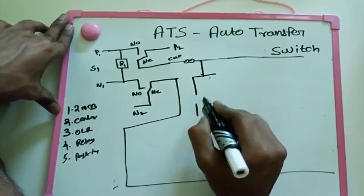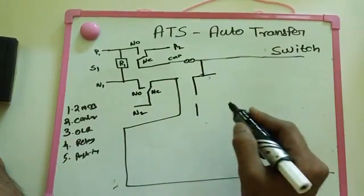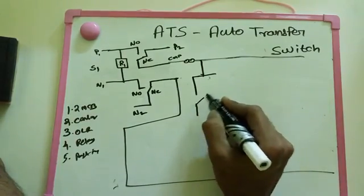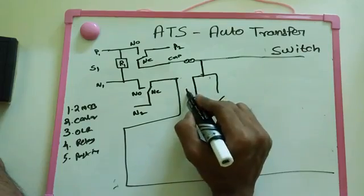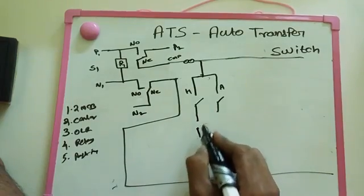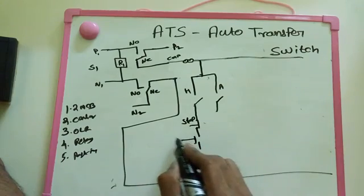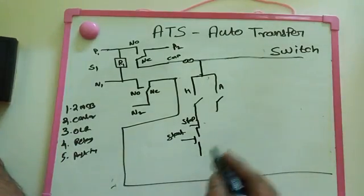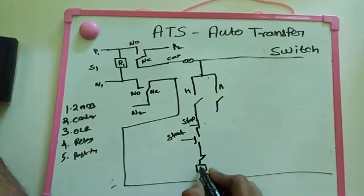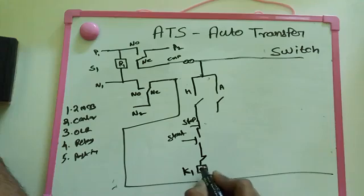First thing we need is hand-off and auto - that means we need hand operation and also auto operation. What is meant by hand and what is meant by auto? If the automatic has a problem - any maintenance issue or any problem with the automatic - at that time we need to maintain hand operation. So here this one is hand and this one is auto. We select using a selector switch. In hand mode, after that we make stop as normally closed and start as normally open. After that we need to interlock another system.